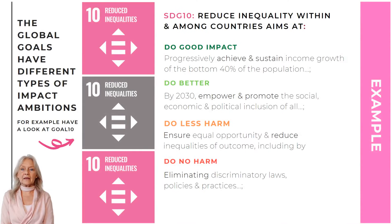An example — Global Goal 10 and its targets. The indicator for do-good progress is income growth that should be at a rate higher than the national average; otherwise it is just an outcome that probably would have happened anyway. Doing better is challenging — it should be irrespective of age, sex, disability, race, ethnicity, origin, religion, or economic or other status. Target 10.4 is action: adopt policies, especially fiscal, wage and social protection policies, and progressively achieve greater equality. Doing less or no harm is not just about reducing and eliminating it — it is also about fixing the system. So Target 10.3 is intentional: promote appropriate legislation, policies and action in this regard. Do-no-harm is pretty straightforward: do away with failing laws that cause or maintain inequality.